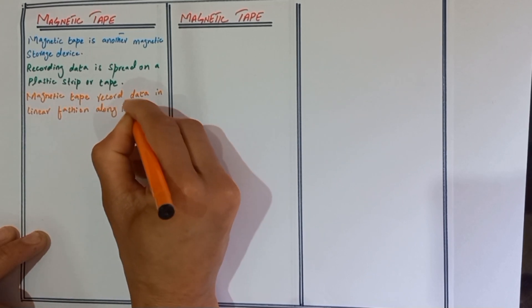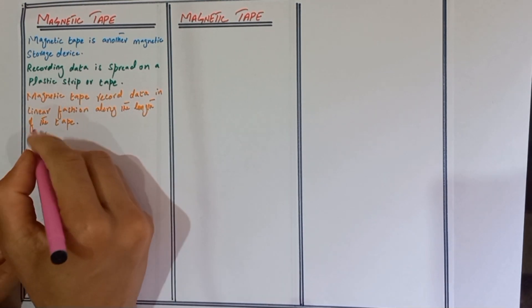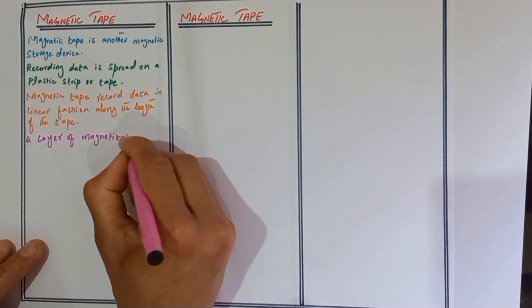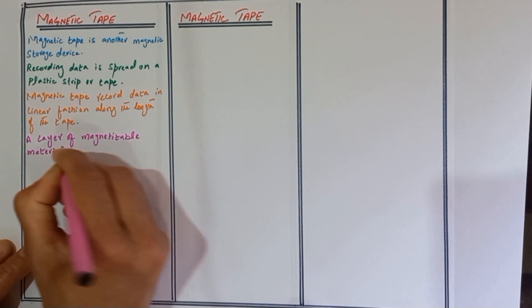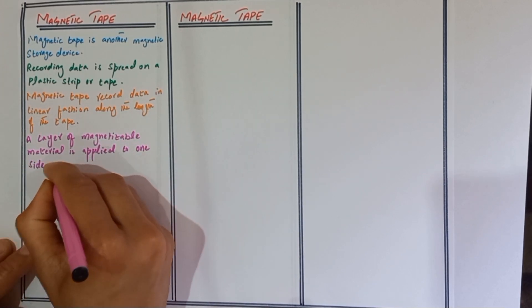A layer of magnetizable material is applied to one side of the tape.